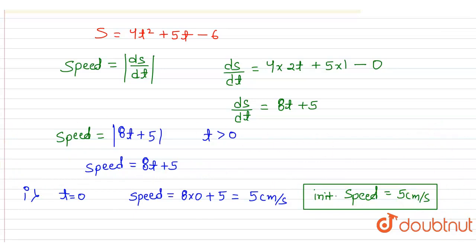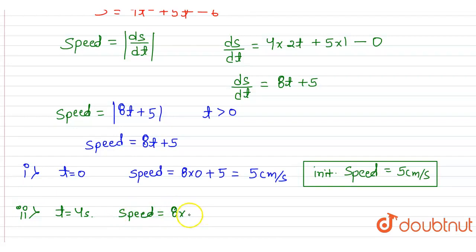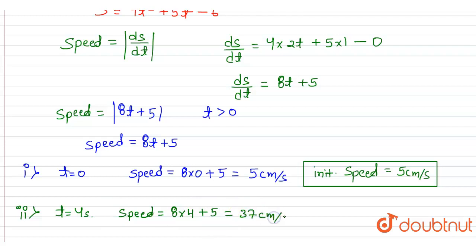In the second part we have to find the speed at t = 4 seconds. Using speed = 8t + 5, we substitute t = 4: speed = 8 × 4 + 5 = 32 + 5 = 37 centimeters per second. So the speed at t = 4 seconds is 37 cm/s. This is our second answer.